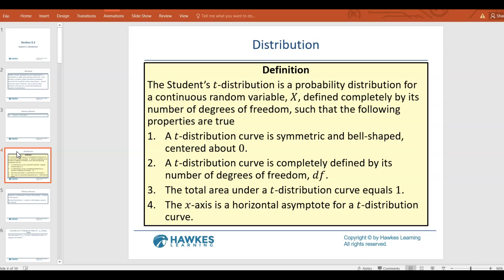They get a different one for every sample size, which gives this thing called the degrees of freedom. The degrees of freedom is the sample size minus one. But for every sample size, there's a different t-distribution.